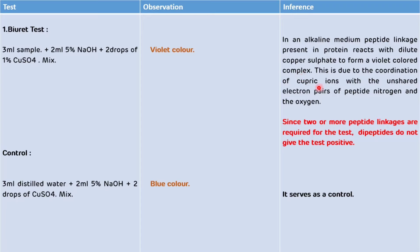This violet color complex is due to the coordination of cupric ions with unshared electron pairs of peptide nitrogen and oxygen. Now we have to do the control test. In the control test, take 3 ml of distilled water instead of sample, add 2 ml of 5% NaOH and 2 to 3 drops of copper sulfate, and mix it properly. The development of blue color indicates the control.